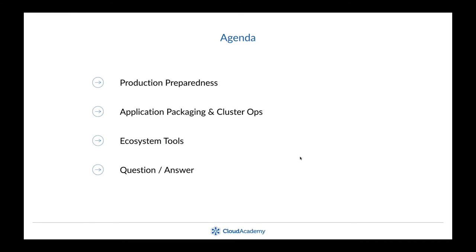We're going to talk about three topics. First, production preparedness — the practices and things you should consider before going into production. Second, application packaging and cluster ops — two tools for how end users can build, develop, and deploy applications to Kubernetes, and how operations staff can build, maintain, and operate clusters. Third, useful tools provided by the ecosystem, some paid and some free.